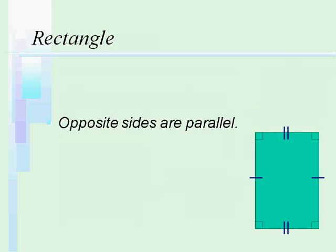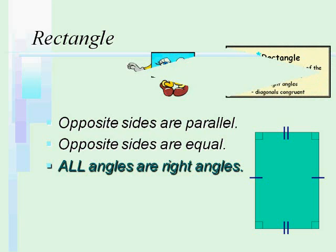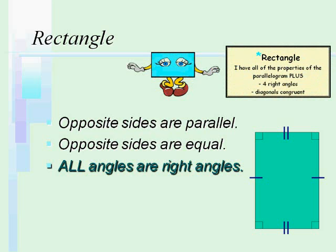Then we have the rectangle where the opposite sides are parallel, the opposite sides are equal, and all angles are right angles. So since they're all right angles that means that the opposite angles have to be equal. So that means that the rectangle has all the same properties of the parallelogram.